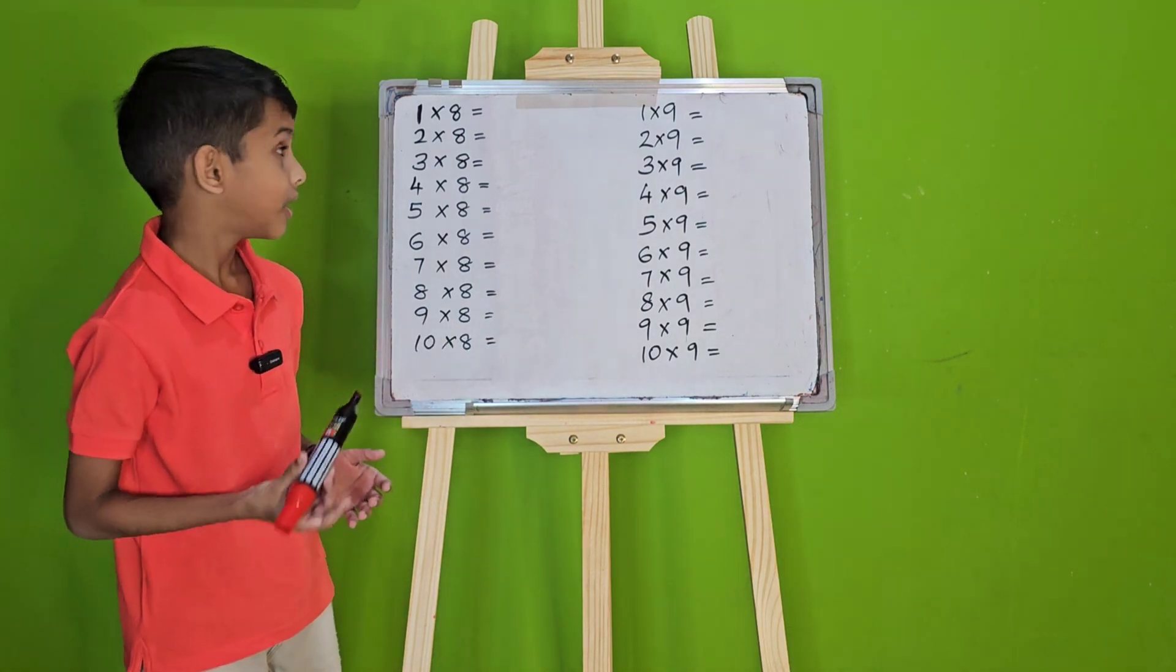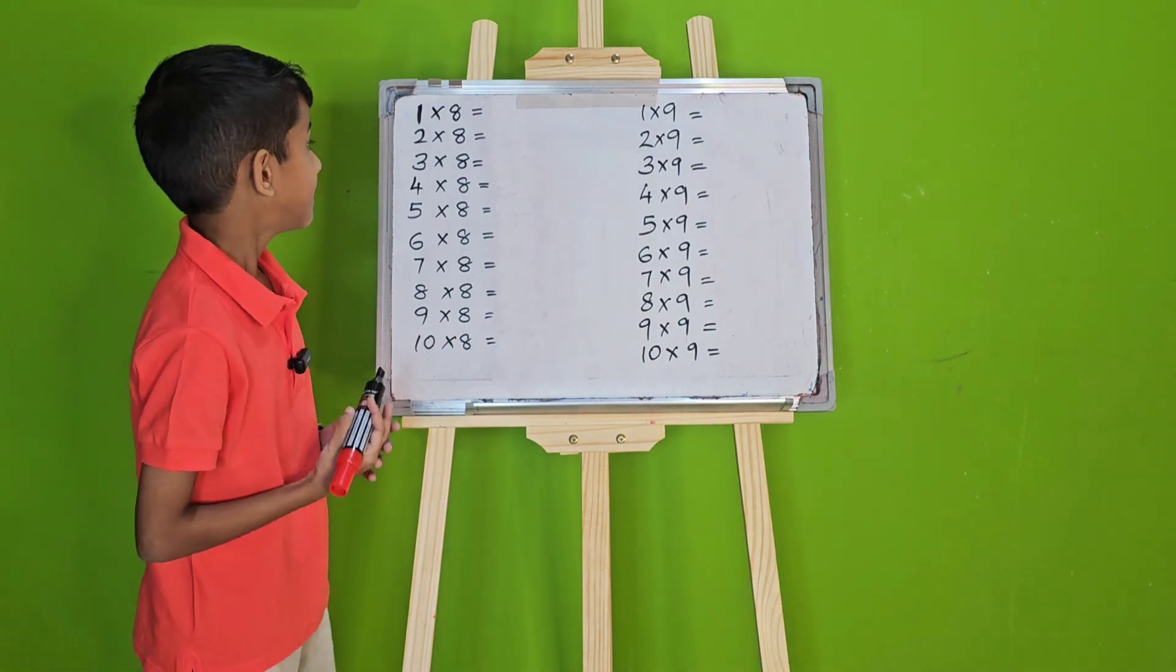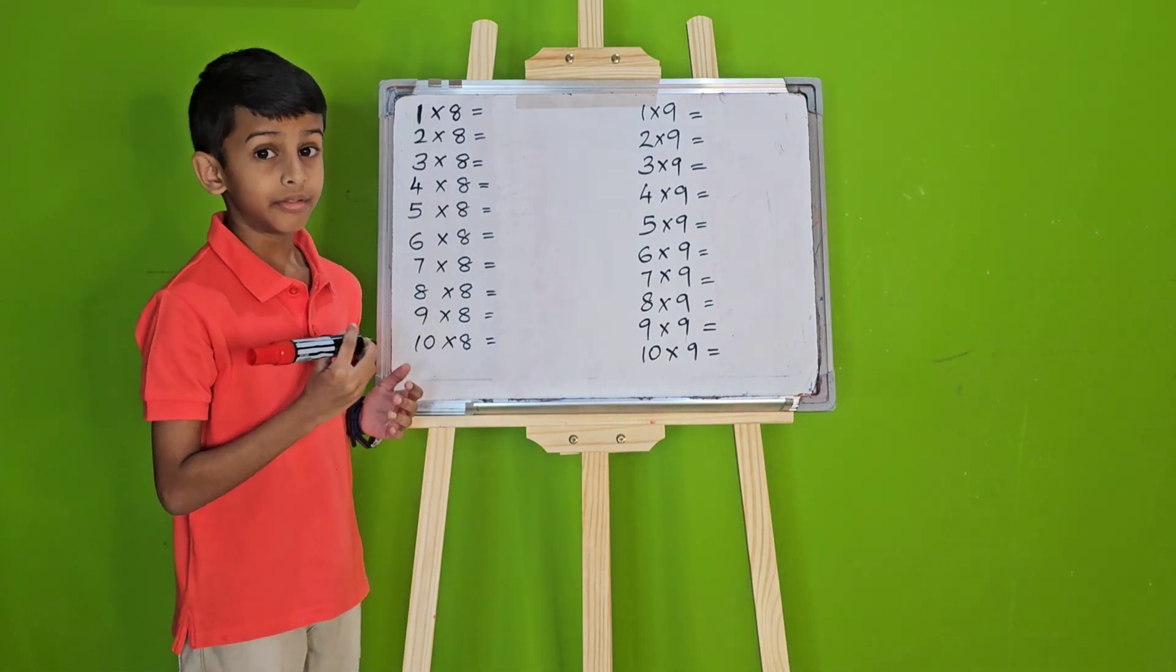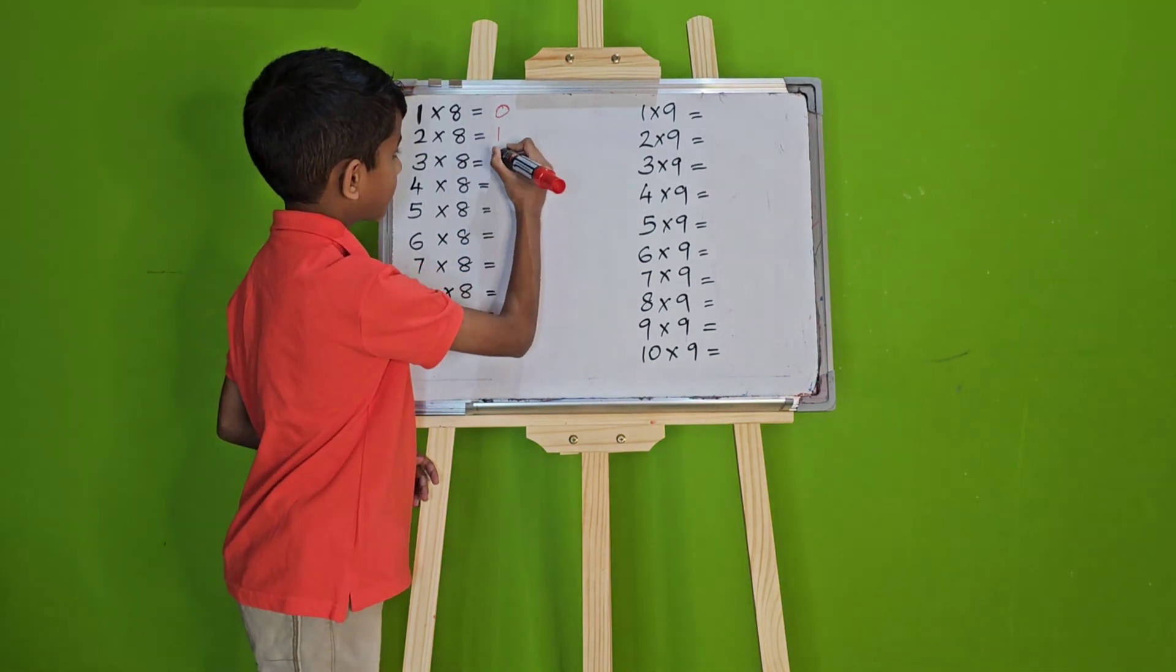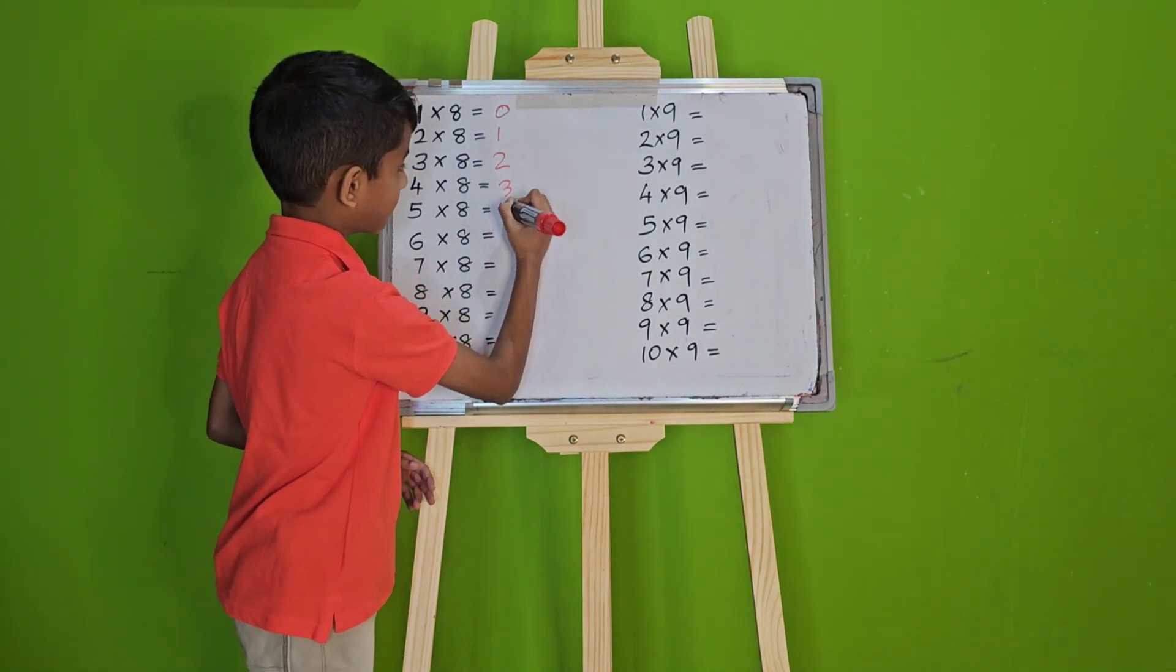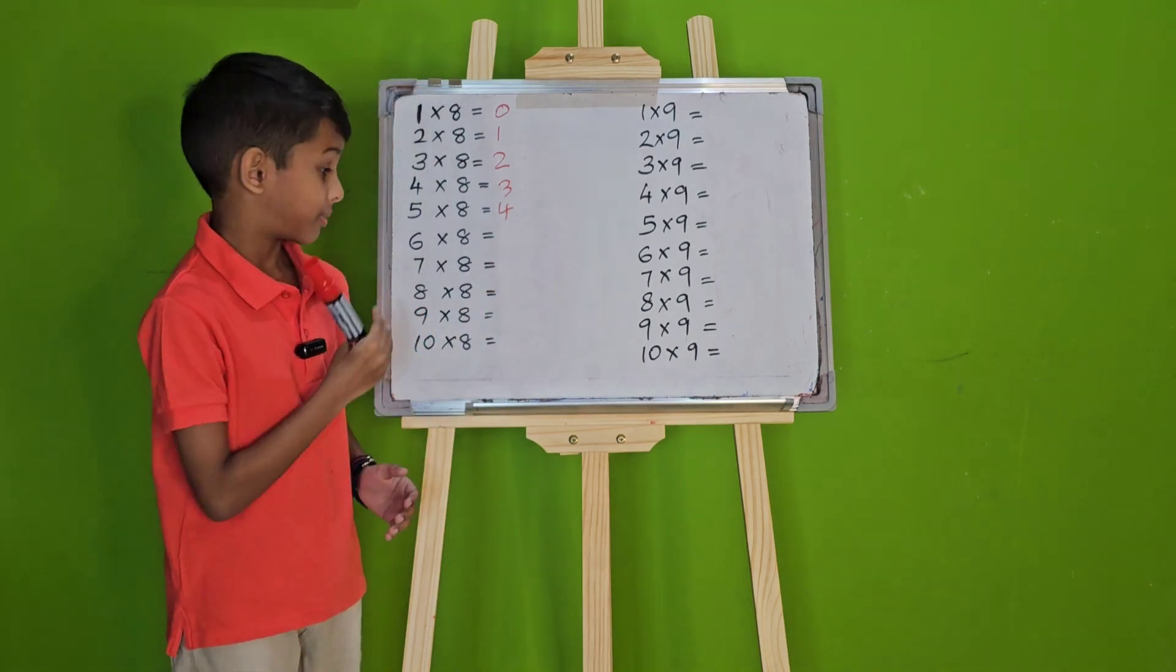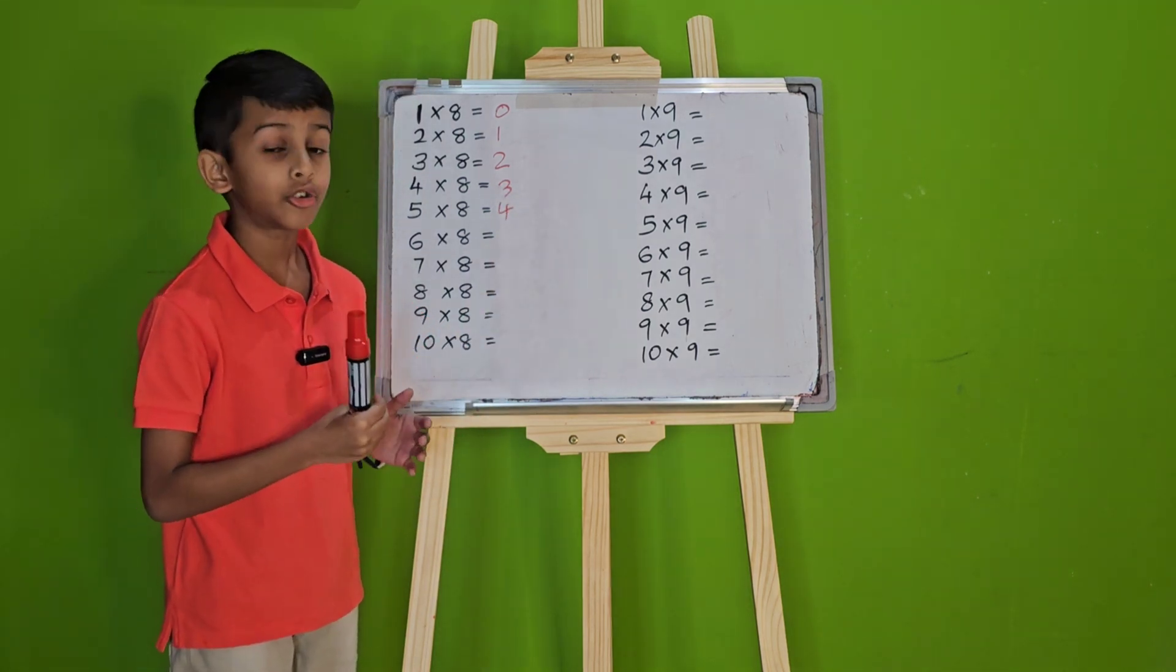First, we will do our 8 times table. From 1 to 5, write 0 to 4. Now, from 6 to 10, write 4 to 8.